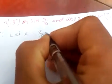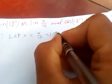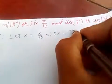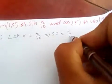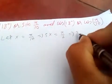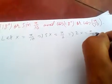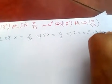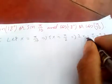First, let x equal pi over 10. If you multiply by 5, you get 5x equals pi over 2. Rearranging this: 2x equals pi over 2 minus 3x.